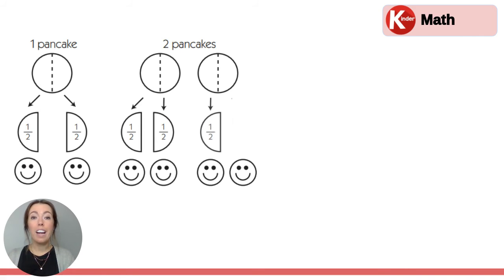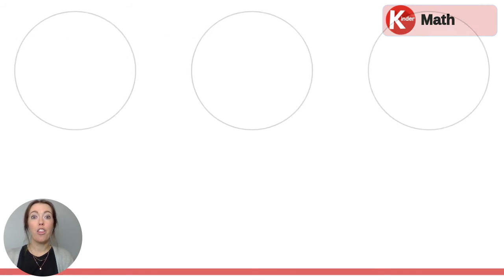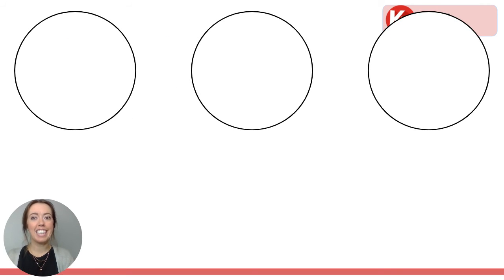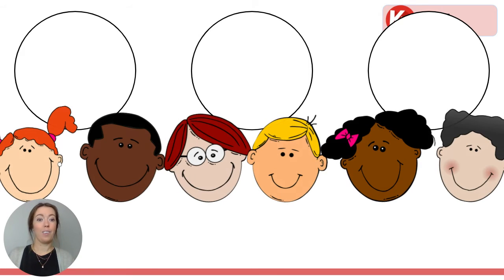Okay, can you predict what's coming next? We had one pancake, then we had two pancakes. Now we're going to have three pancakes. Let's see who's going to share these pancakes. Ooh, how many people is this? Let's count—one, two, three, four, five, six people are sharing three pancakes.